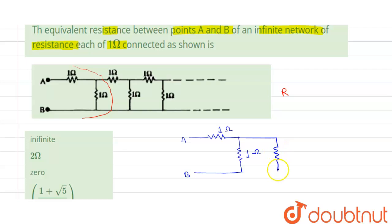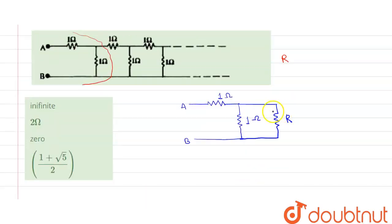And here we have R equivalent connected across the two points A and B. So this is R equivalent, or we can say it as R. So here resistance R represents the equivalent of this infinite number of resistances.